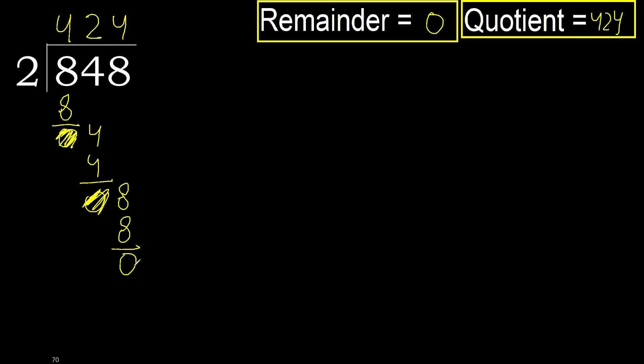Ok. Therefore 848 divided by 2 is 424. Ok. Thank you.